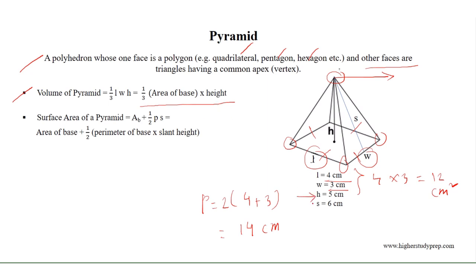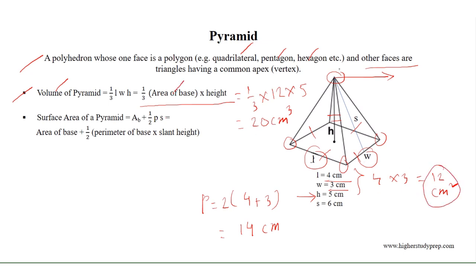It is given that the height of the pyramid H is equal to 5 cm. Therefore the volume of the pyramid equals one third of 12 times 5, which results in 20 cm³, where 12 is the area of the base of the pyramid.